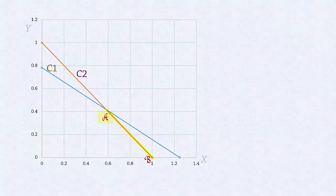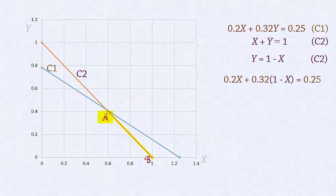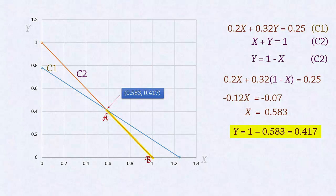To find the coordinates at point A, we solve the two equations simultaneously to obtain x equals 0.583 and y equals 0.417. Likewise, at point B, the coordinates are x equals 1 and y equals 0.